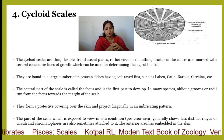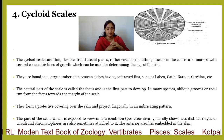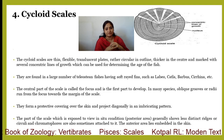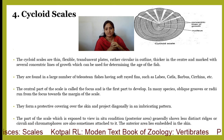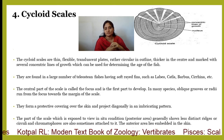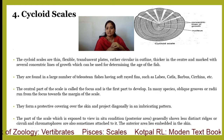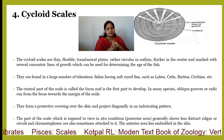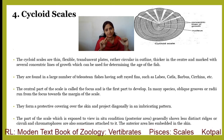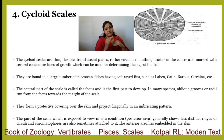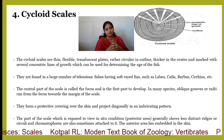In some species, oblique grooves or radii run from the focus towards the margin of the scale. They form a protective covering over the skin and project diagonally in an imbricated pattern. The part of the scale exposed to view in situ generally shows less distinct ridges or circulii, and chromatophores are also sometimes attached to it, providing different colours to the scales. The anterior end lies embedded in the skin.